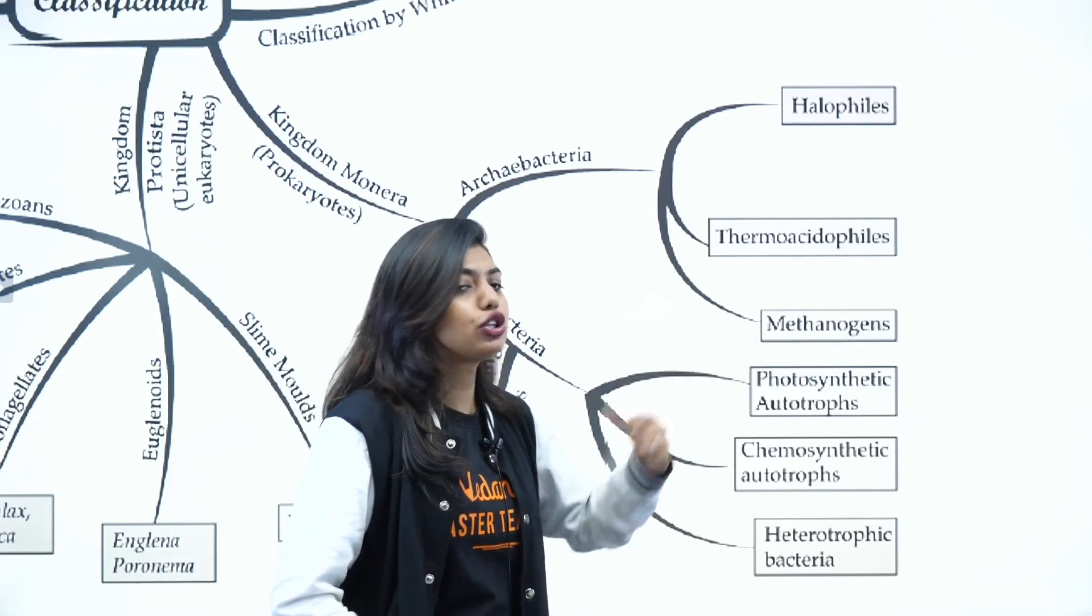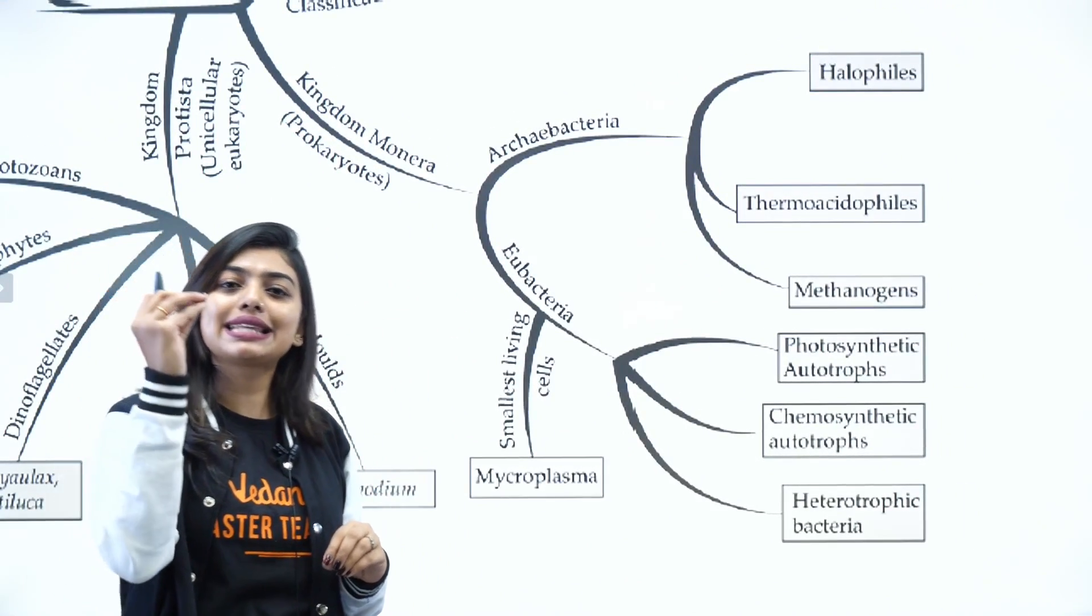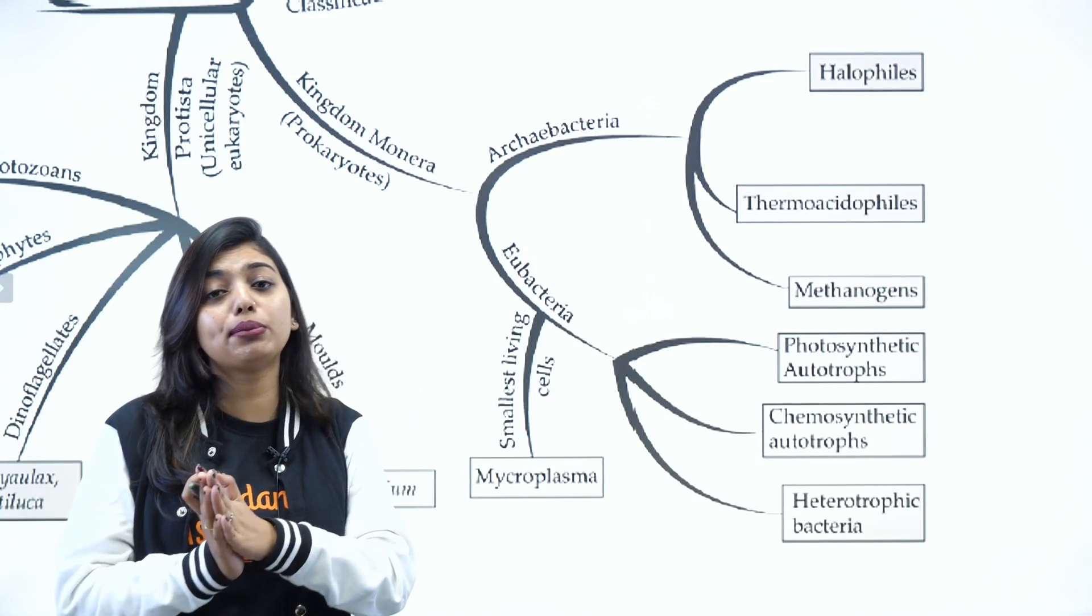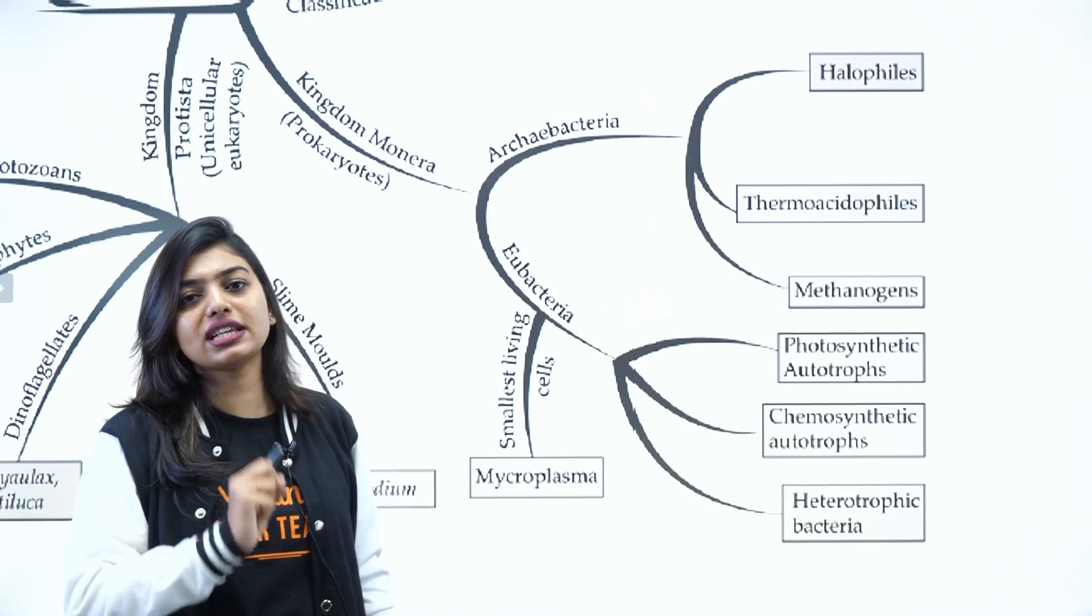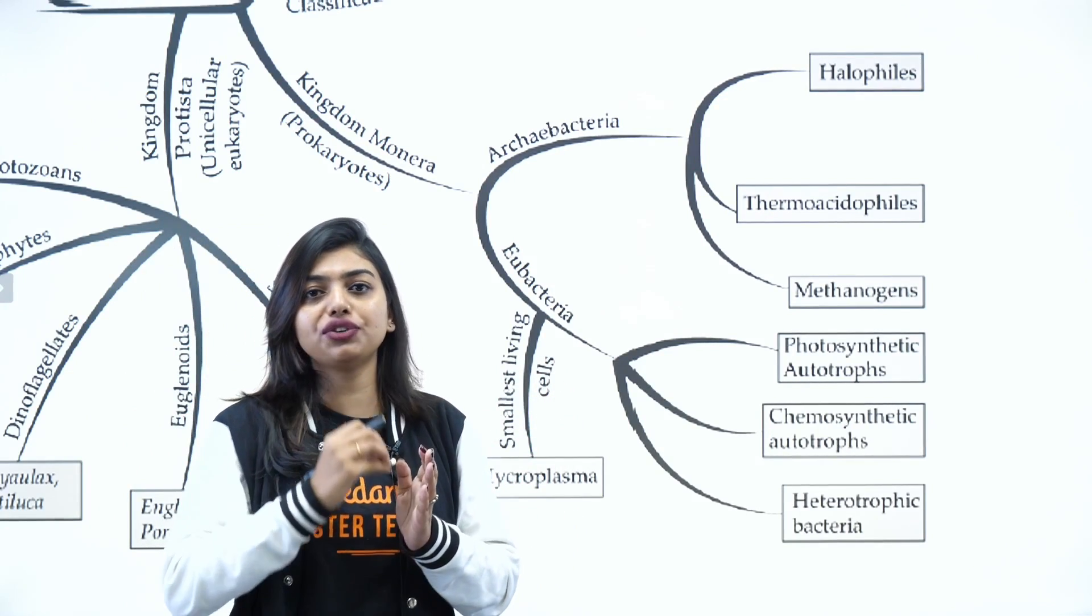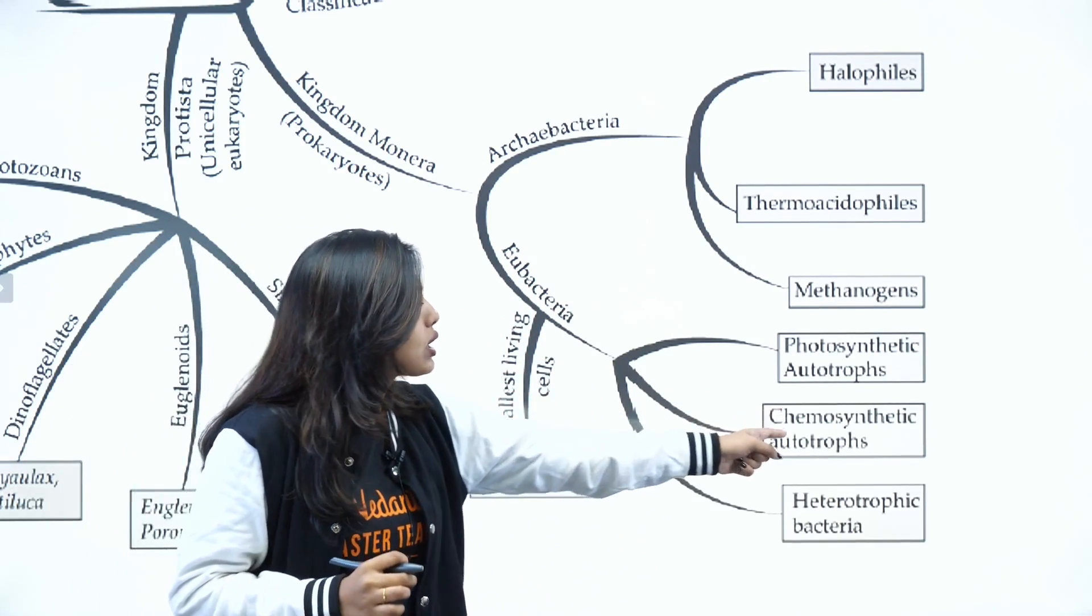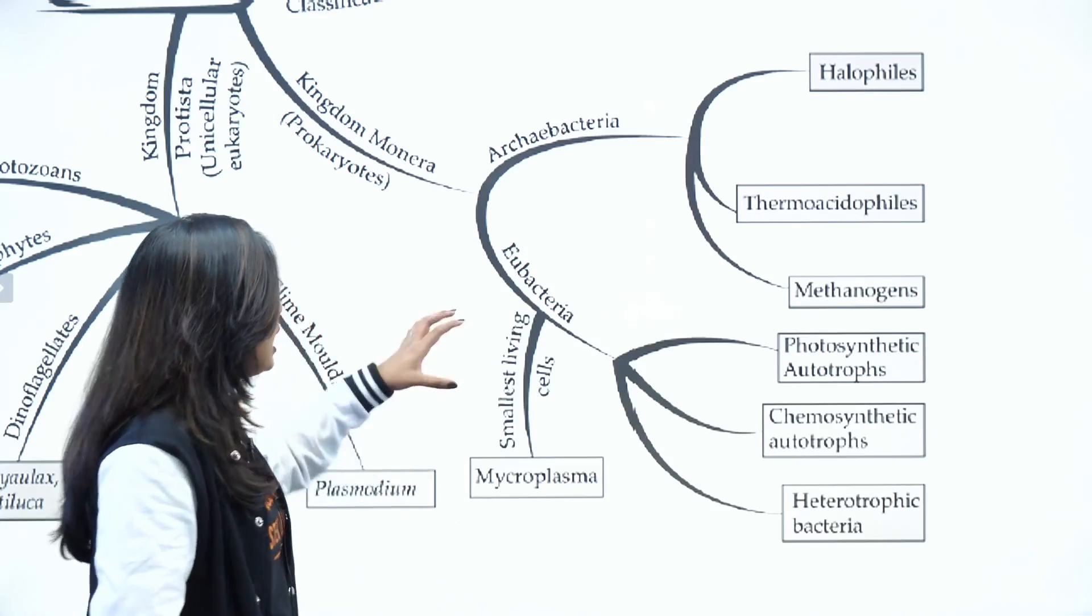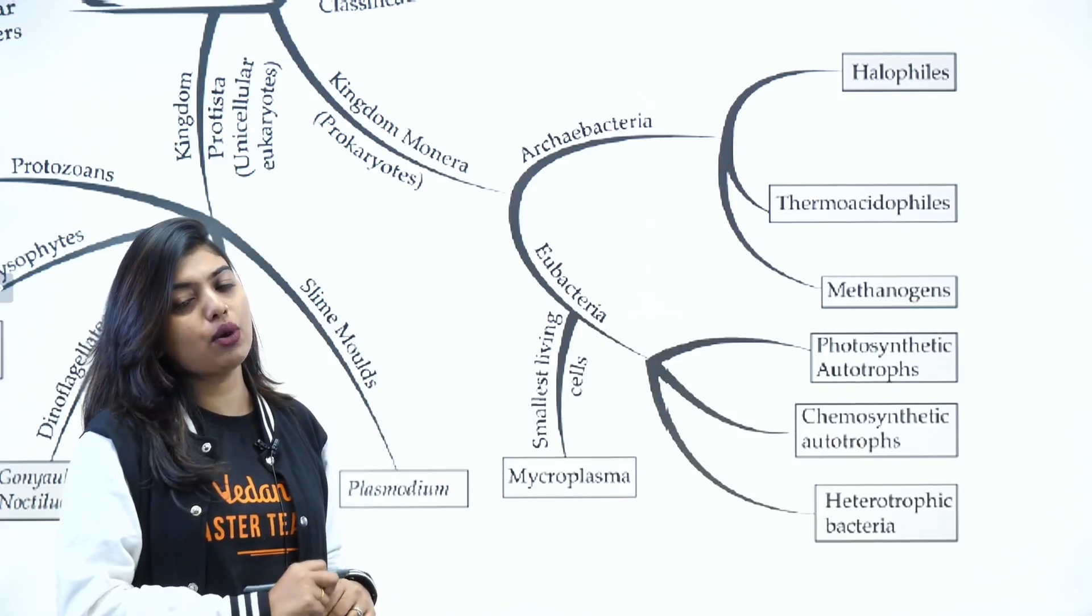When we come to Eubacteria, major classification is cyanobacteria and mycoplasma. Cyanobacteria are the ones where you have your blue-green algae which is capable of doing photosynthetic autotrophism. Then we have others who have the presence of heterocyst in their body like Nostoc. Those people are able to do nitrogen fixation - in simple words, take inorganic components and yield energy which is called chemosynthetic autotrophs. Then we have heterotrophic - that means depend on other organisms for food. Then we have mycoplasma, which is the smallest living cell present with the absence of cell wall. This is very important to remember.